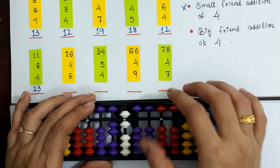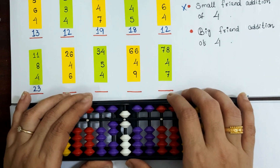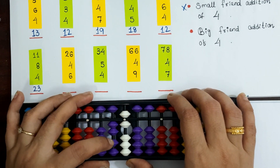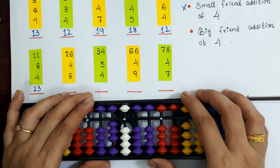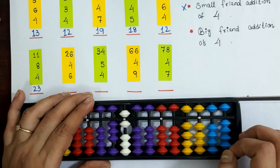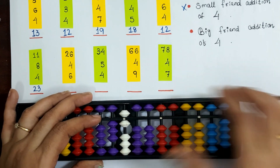Next example: 26 plus 4 plus 6. For 26 plus 4, applying plus 10 minus 6. Answer is 36.